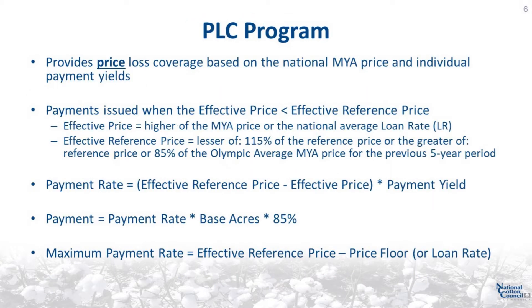The PLC program provides price loss coverage based on the national marketing year average price and individual payment yields. PLC payments are issued when the effective price is less than the effective reference price. The effective price is equal to the higher of the national marketing year average price or the national average loan rate. The effective reference price will only be higher than the statutory reference price following several years of much higher prices. Given current price projections, the effective reference price for seed cotton is expected to equal the statutory reference price. The payment rate is equal to the effective reference price minus the effective price, times the payment yield. The PLC payment is equal to the payment rate times base acres times 85%. The maximum payment rate is equal to the effective reference price minus the price floor for seed cotton, or the loan rate for other covered commodities.